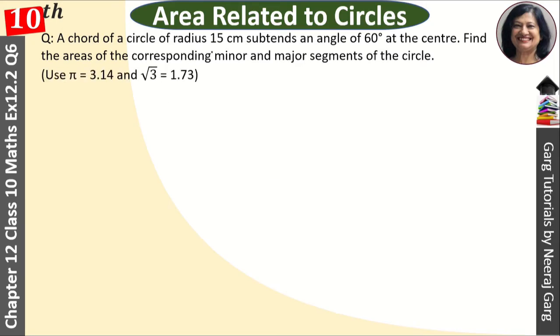A chord of a circle of radius 15 centimeters subtends an angle 60 degree at the center. Find the area of corresponding minor and major segment of the circle. Use pi is equal to 3.14 and root 3 is equal to 1.73.